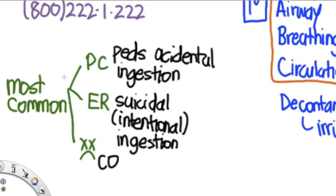Now let's talk about some of the most common presentations. The most common call to a poison control center is going to be a pediatric accidental ingestion, like a kid who took a pill or ran into grandma's bottles. The most common reason for coming to the emergency room is a suicidal ingestion, an intentional ingestion. Finally, worldwide, the most common reason for death is carbon monoxide poisoning.